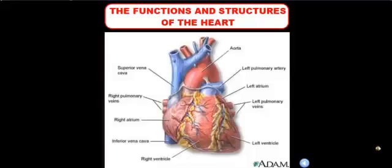So the three main structures that we're going to talk about include the heart, the blood vessels, and the blood. So first of all, we're going to start off with the heart.